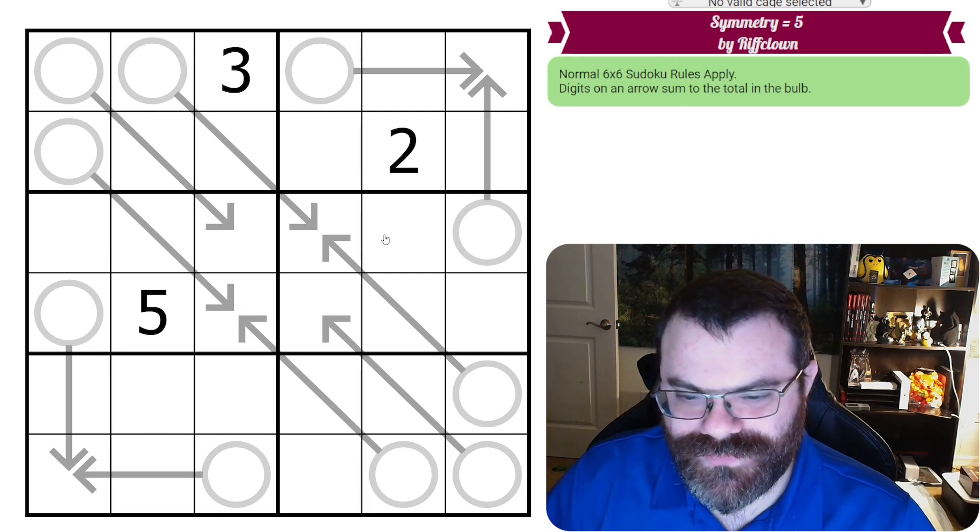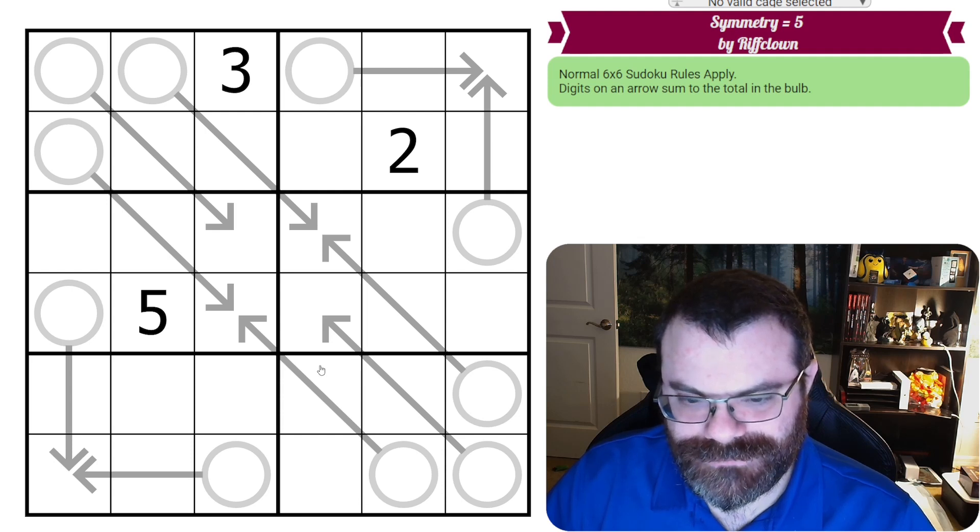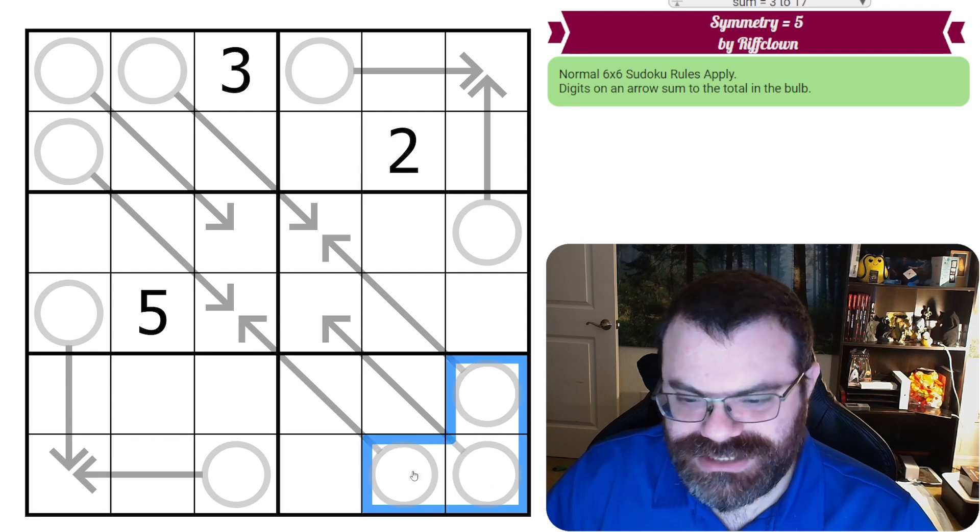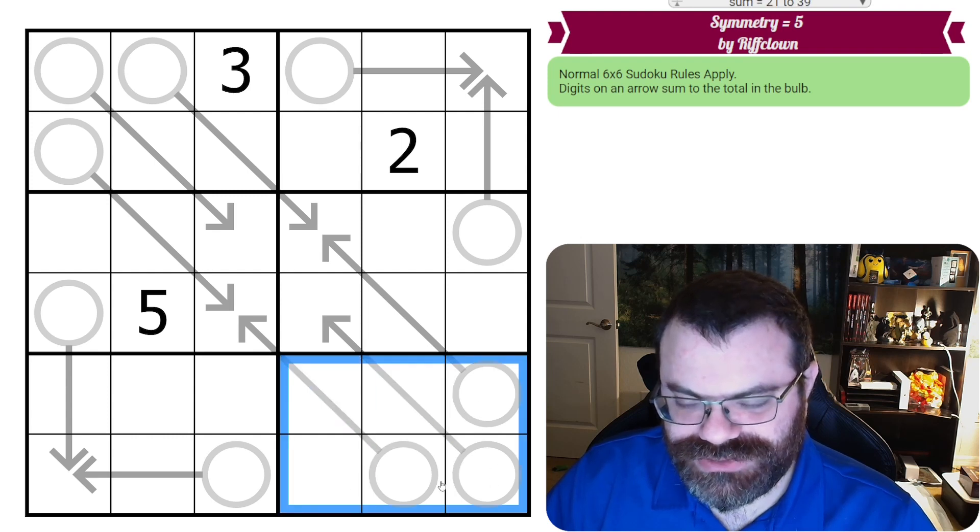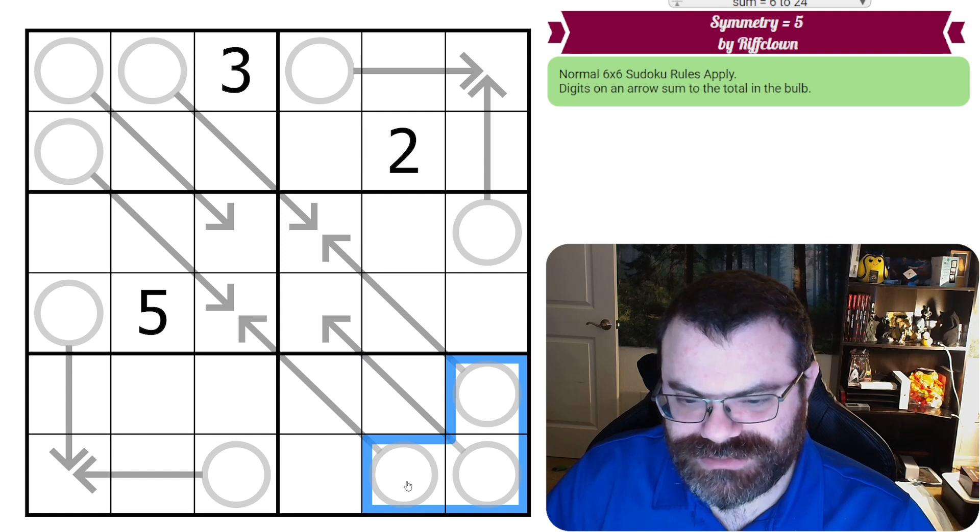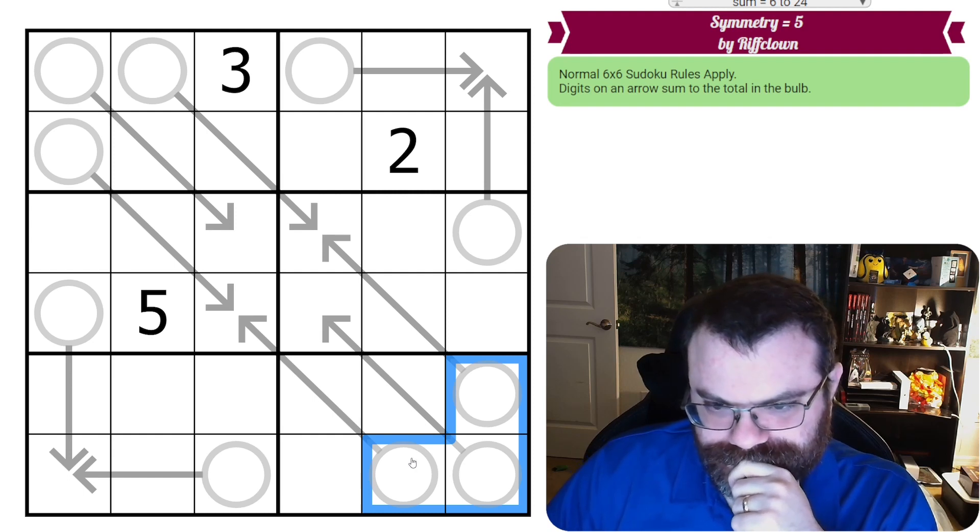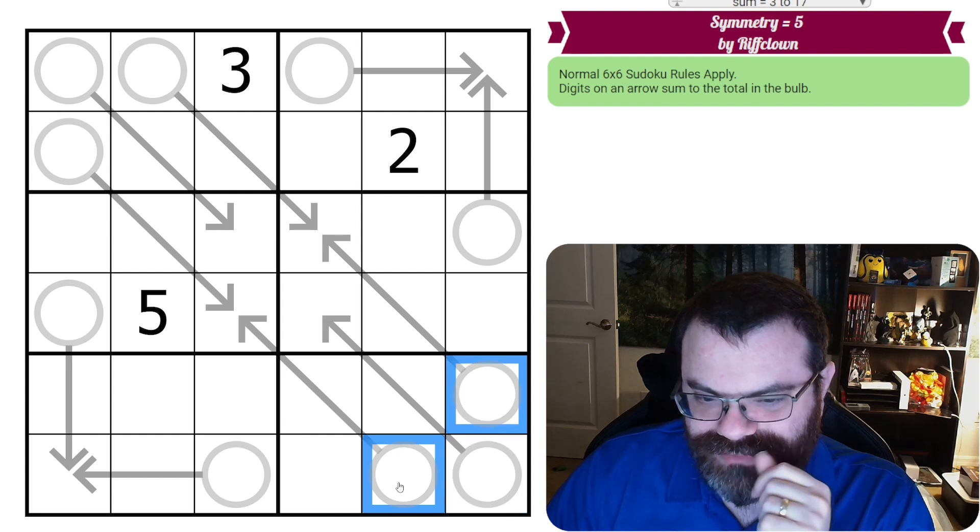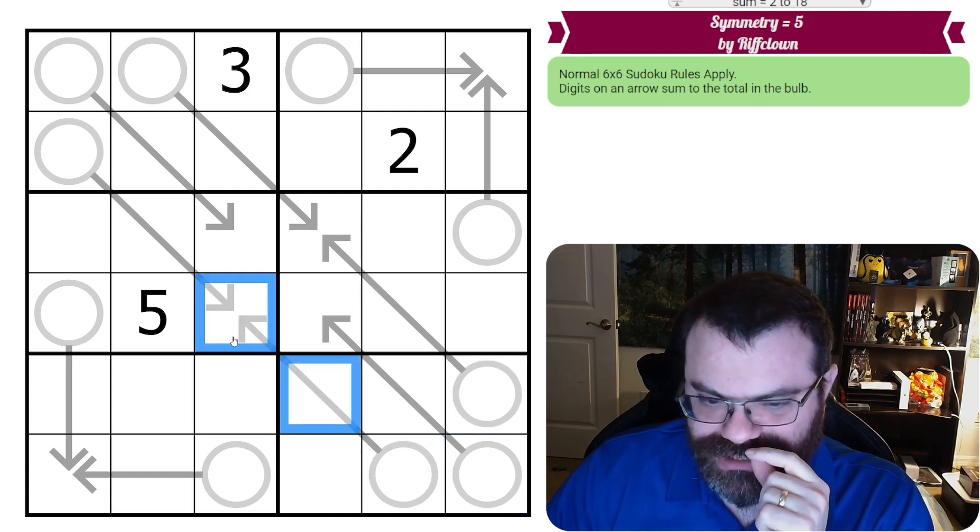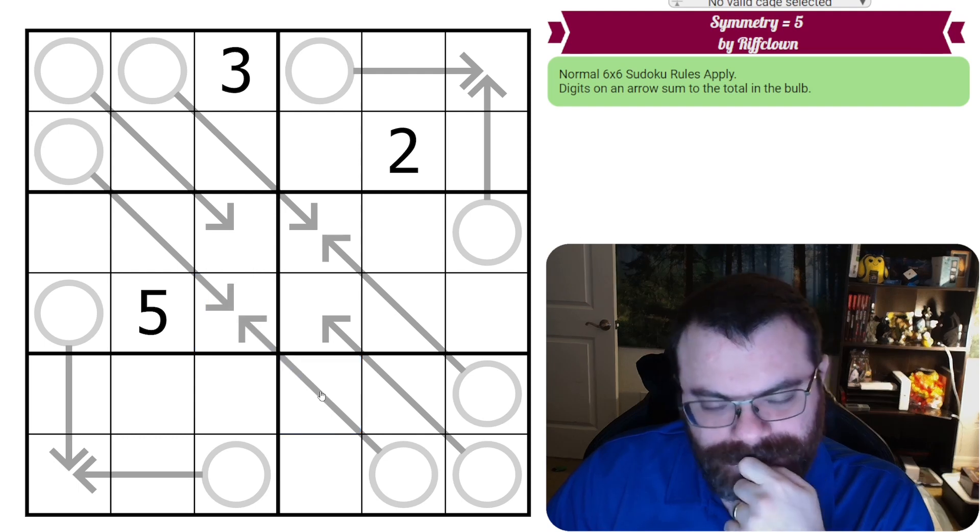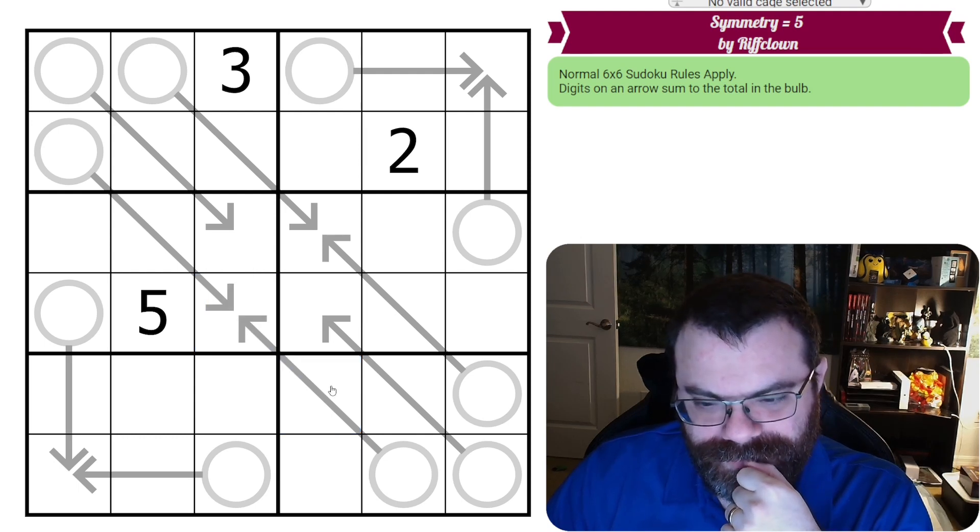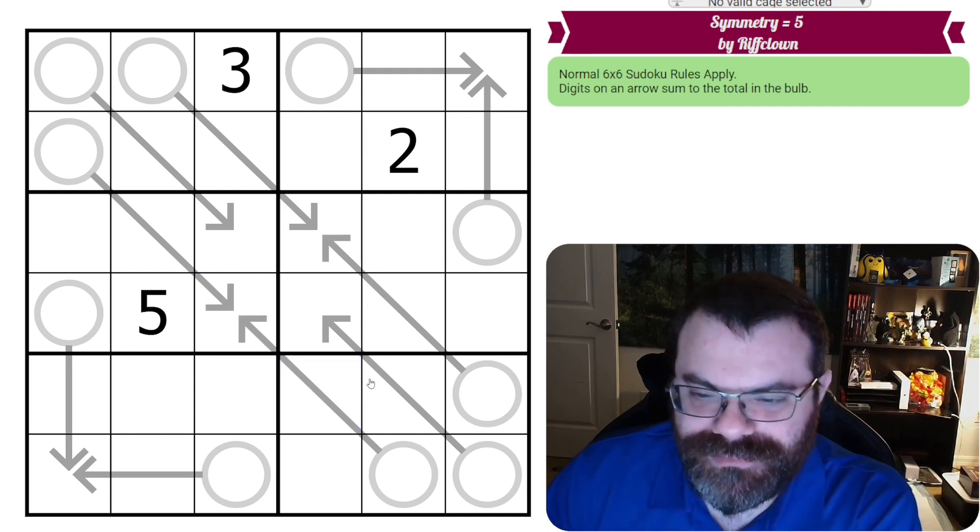All right, so these diagonal arrows are super interesting. This box in general is interesting, so we're not putting a 1 in any of these cells. This could be a 2, but these can't be 2s. This could be a 2 as well with 1 in 1. Let's combine arrows, maybe? So let's think about this.